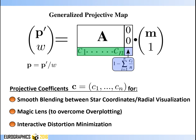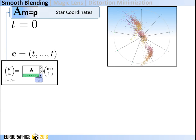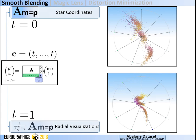We automatically steer the projective coefficients to define three useful applications. First, we introduce a smooth blending between star coordinates and radial visualizations. For this, the vector of projective coefficients is set equal to a single parameter t: if t equals 0 we get star coordinate projection, and if t equals 1 we get radial visualization projection.